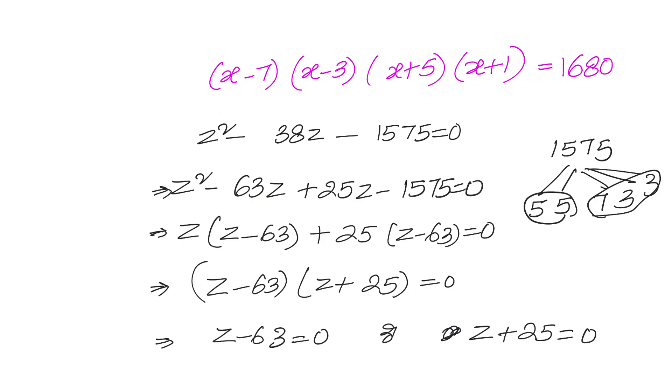That will give us either z minus 63 equals to 0 or z plus 25 equals to 0. But what is our z? z is x square minus 2x. So we will have x square minus 2x minus 63 equals to 0. Now, we have to solve these two equations and get our solution.